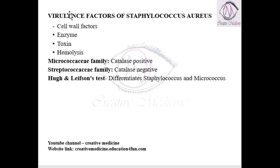In Staphylococcus aureus, the virulence factors include the cell wall, enzymes, toxins, and hemolysins. First important is cell wall factors, and then we have enzymes, toxins, and hemolysis. Each of them we will deal with in detail.